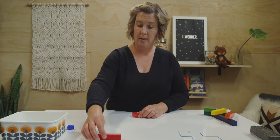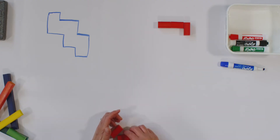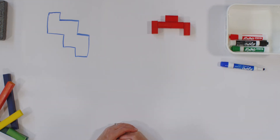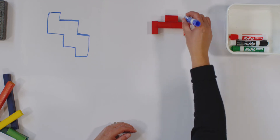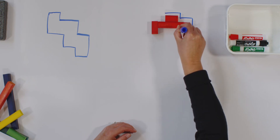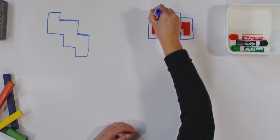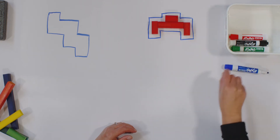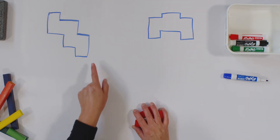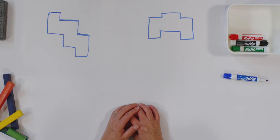Let's try it again in the other corner. Remember, build on your paper so that we can trace. Your design can match mine or it can be different. When you're done, get out your marker or pencil and trace around it. When you're done, take off your blocks. Look at how different our designs are. But did our blocks change? No, we're still using five.